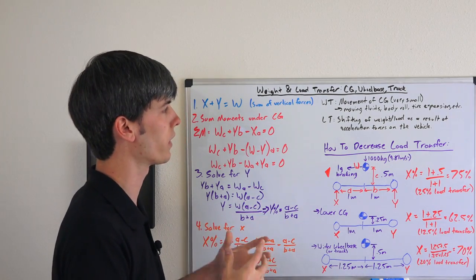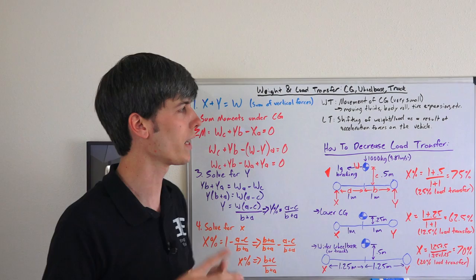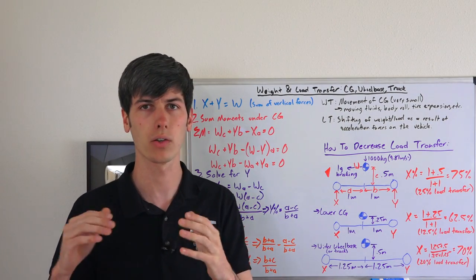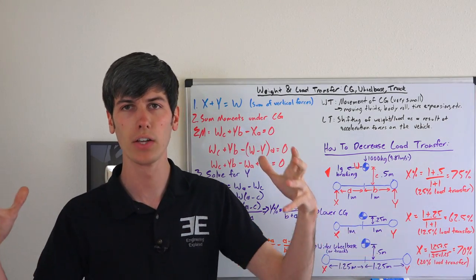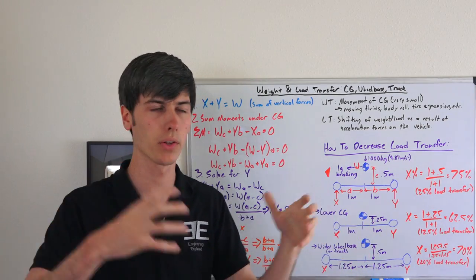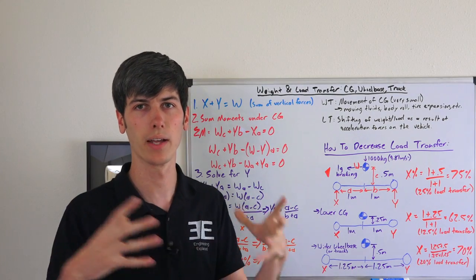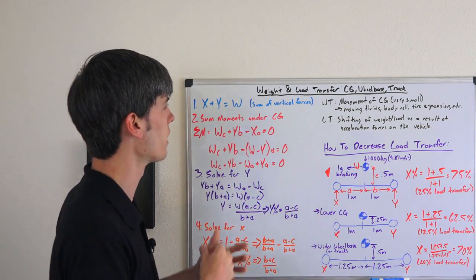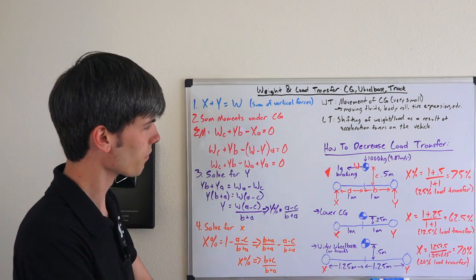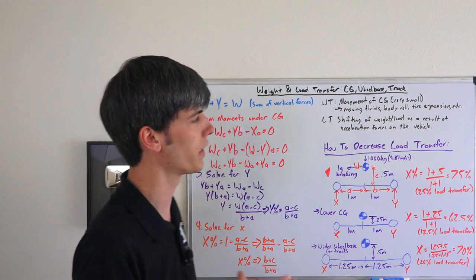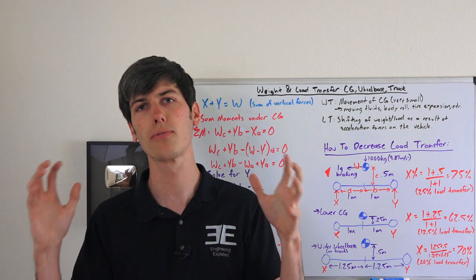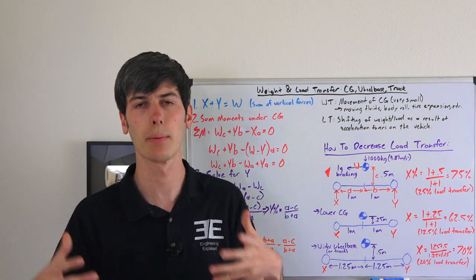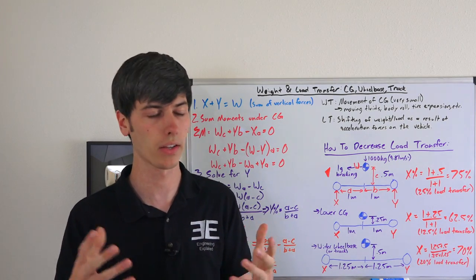Now load transfer is different and this is basically the shifting of weight or load as a result of acceleration forces on the vehicle. So if you slam on the brakes you're going to have some load transfer to the front wheels so the front wheels are going to have more weight on them than the rear wheels. That's basically how load transfer works and essentially what you want in an ideal car is for all four wheels to be evenly loaded. That will give you the best lateral grip, best braking, best acceleration.